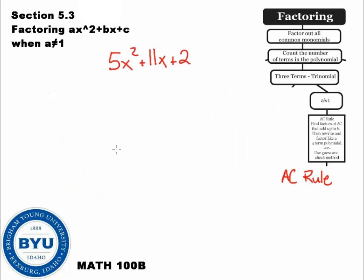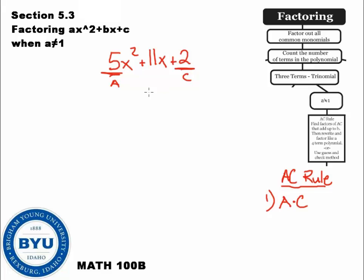When factoring a three-term polynomial when the first value is not equal to 1, you've got to use what's called the AC rule. Step 1 is to do A times C — you take the first value times the last value. In this situation, our A is 5 and our C is 2, so 5 times 2 equals 10.